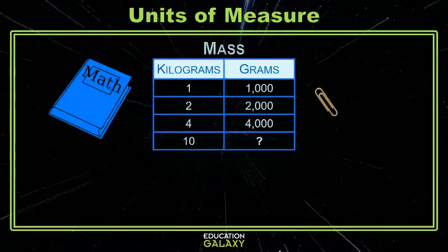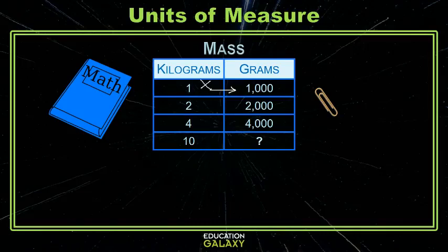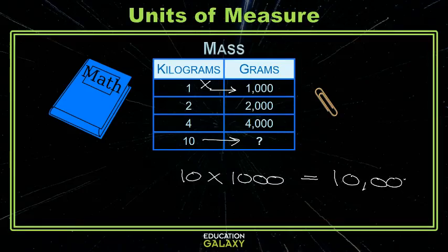Let's try converting with mass. Here we have mass in kilograms and grams. A paper clip is about a gram, and a textbook is about a kilogram. The textbook is heavier, so we're going from the bigger unit to the smaller unit. To do that, we multiply. We're given that 1 kilogram is 1,000 grams. We multiply 10 by 1,000, and that gives us 10,000 grams.